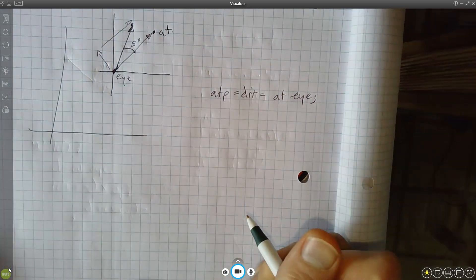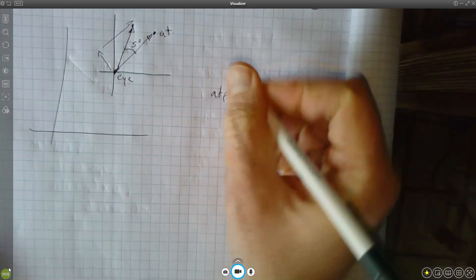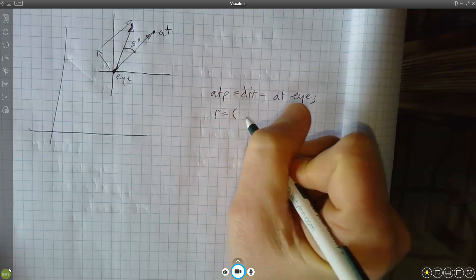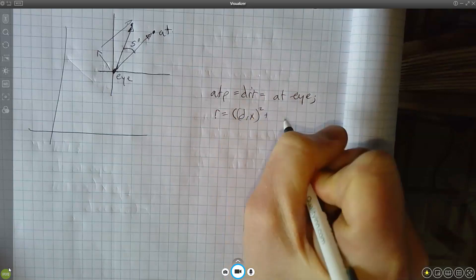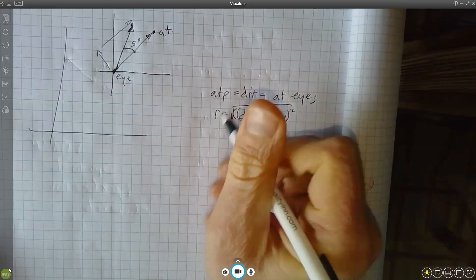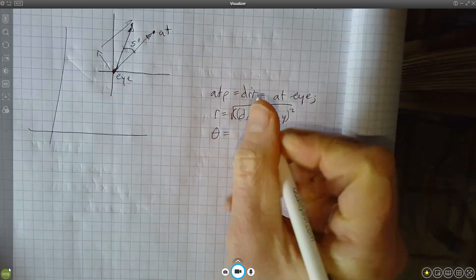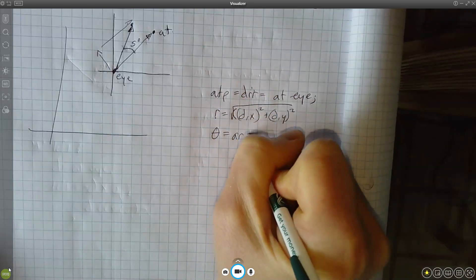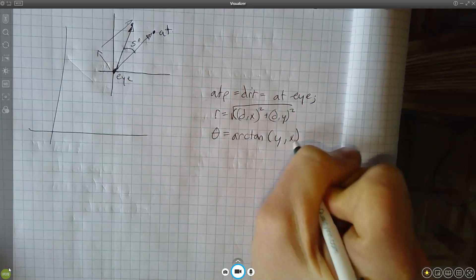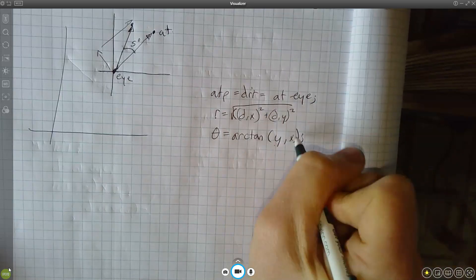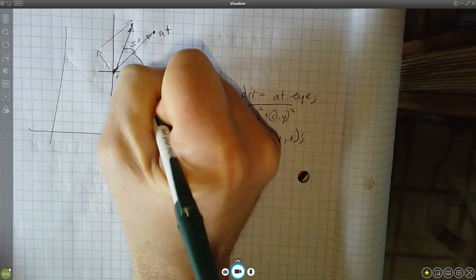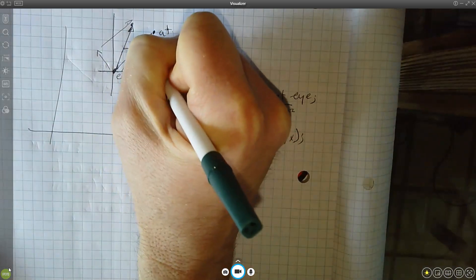So we break out Wikipedia and it tells us that in order to convert this we have r equals direction dot x squared plus direction dot y squared square root and theta equals arc tangent of y over x, where this y x is the direction x and y. So now we have a theta and an r, so this is my theta, this distance here is my r, my radius.